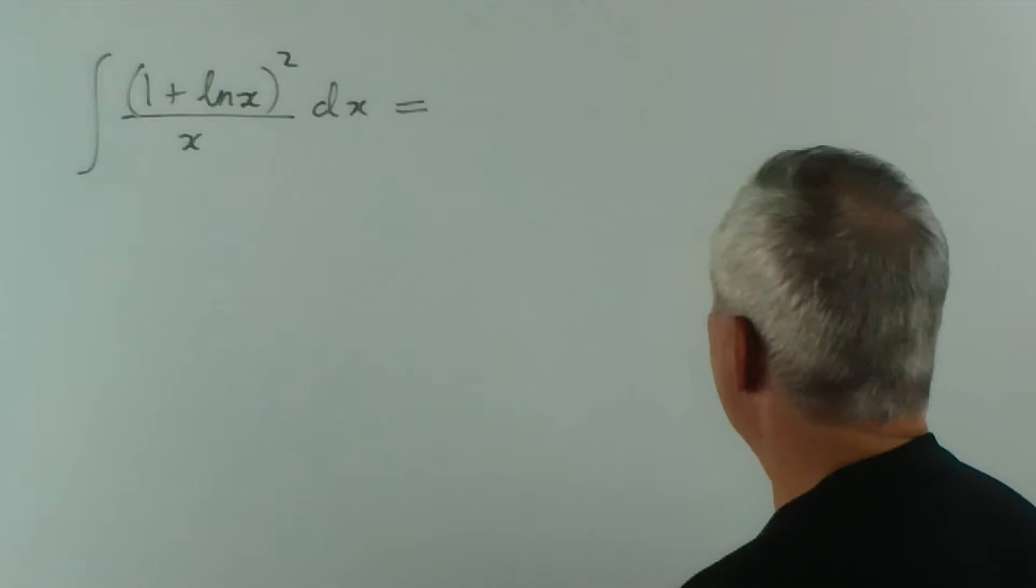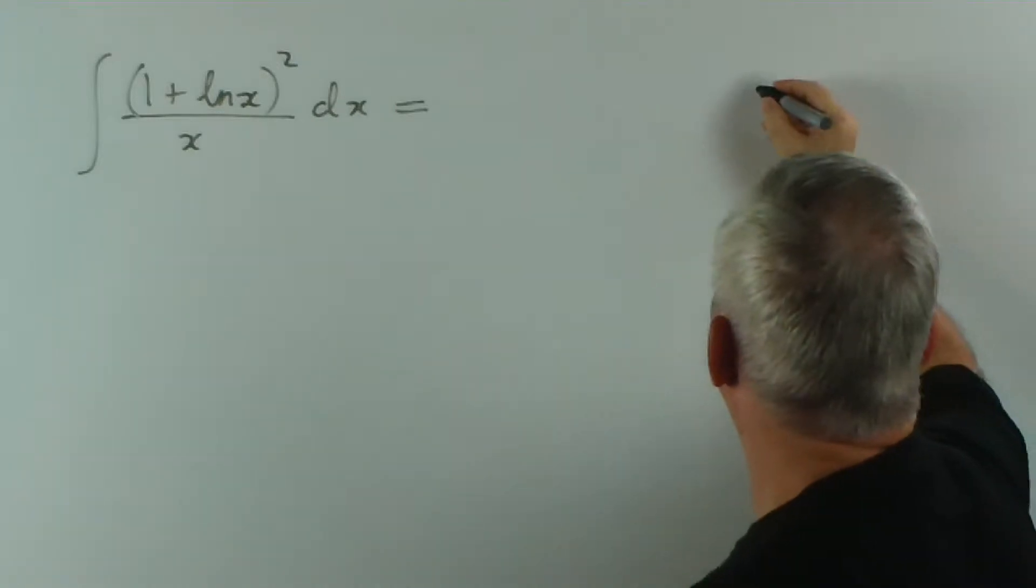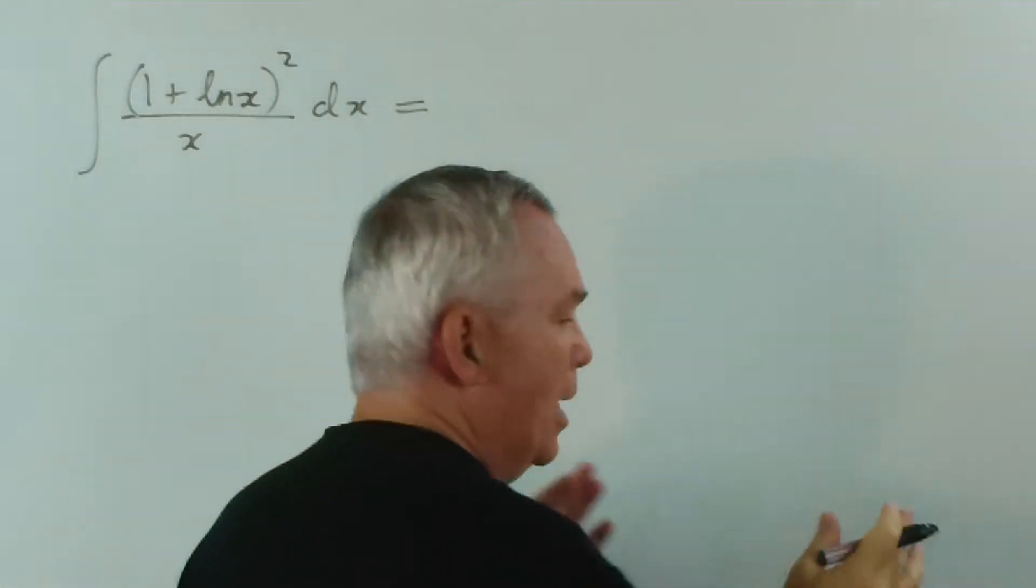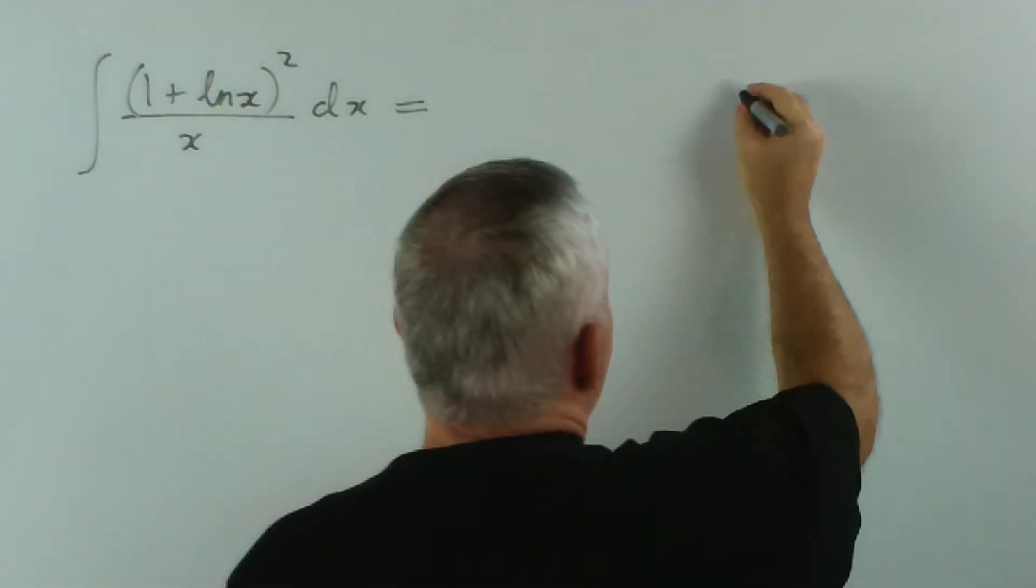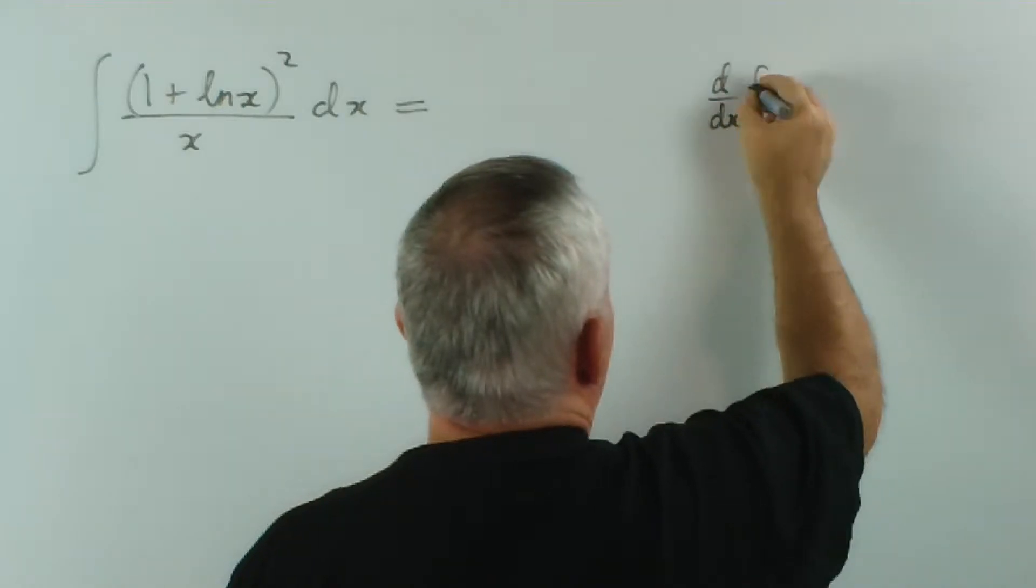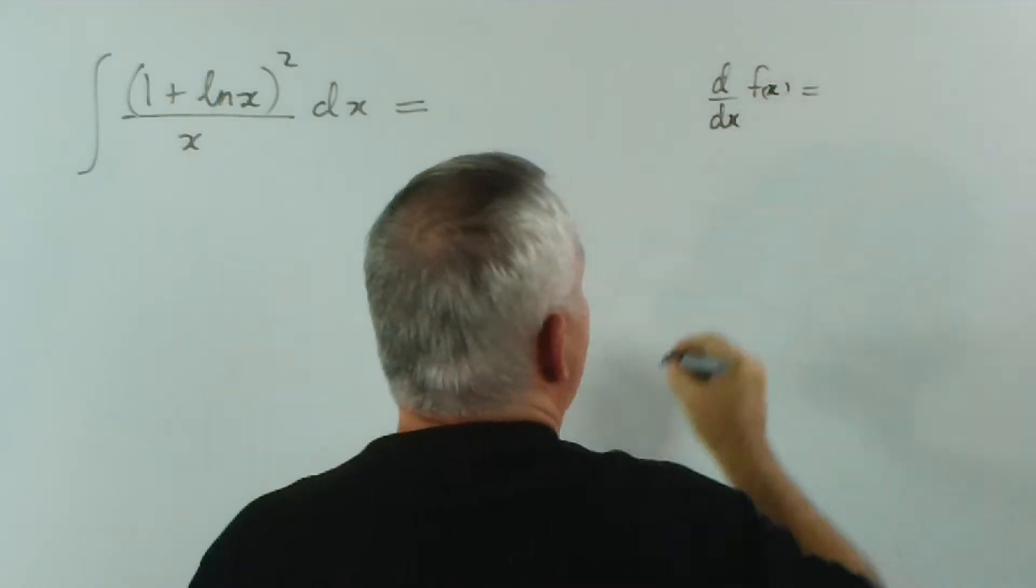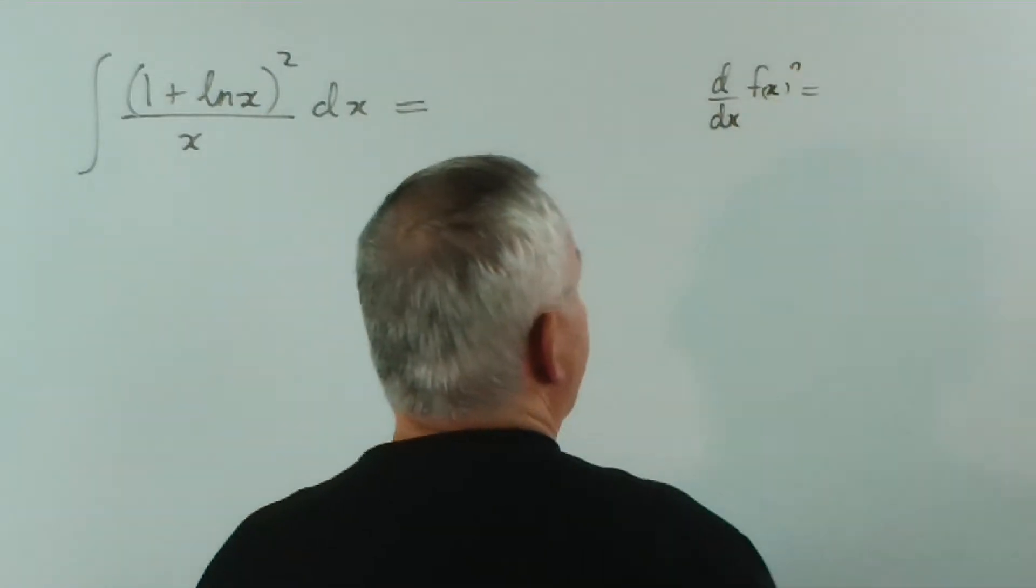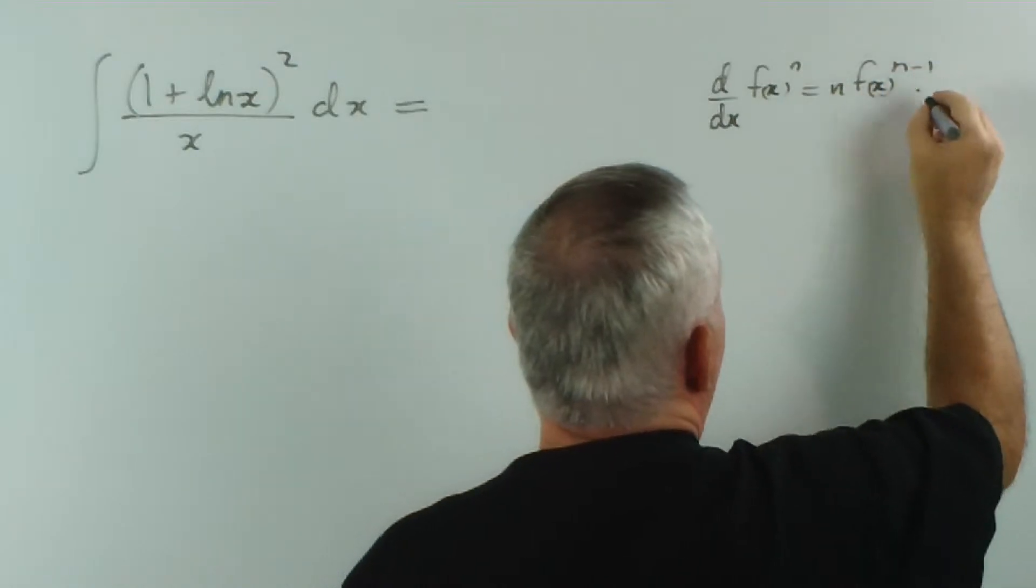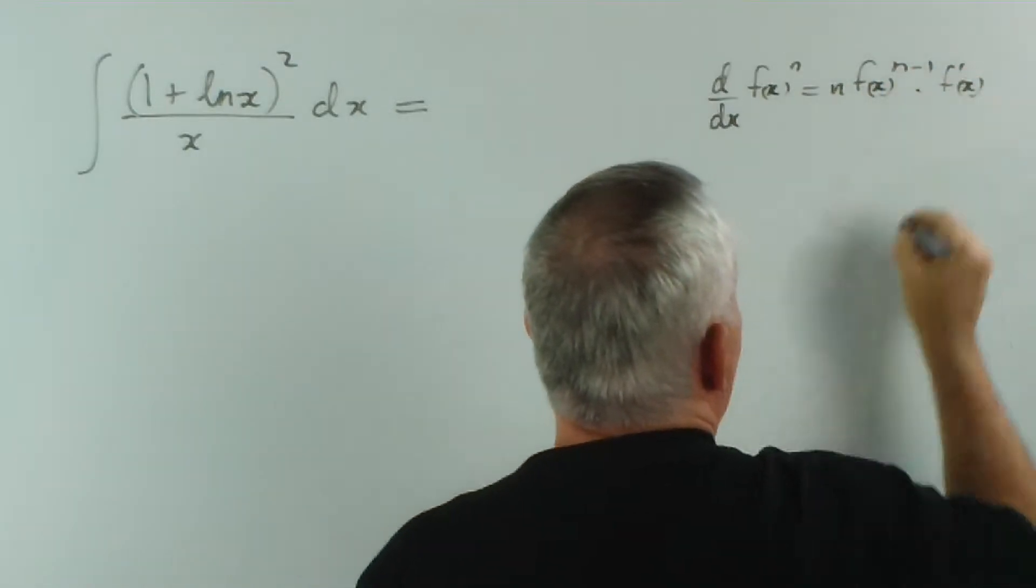And in fact, it is the pattern where... I'll just reconstruct the pattern for you, because I realize you may not have come from one of my previous videos. If we find the derivative of some function of x to some power, it's going to be n f(x) to the n minus one times the derivative of f.